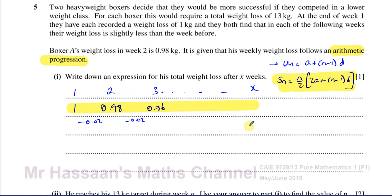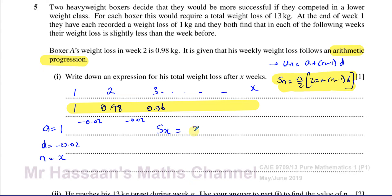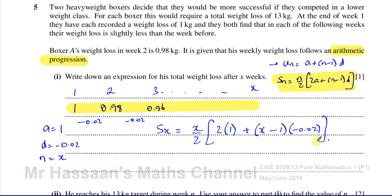To find the sum, we need: a, the first term, which is 1; d, the common difference, which is negative 0.02; and n equals X. So the sum of the first X terms will be X over 2 times (2 times 1 plus (X minus 1) times negative 0.02). That gives us our answer.